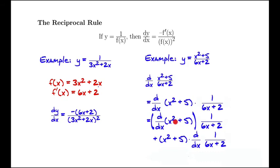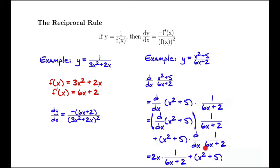So now we just need to take these derivatives. The derivative of x squared plus 5 is just 2x. We leave the 1 over 6x plus 2 alone, so we multiply by 1 over 6x plus 2. Plus (x squared plus 5), which we leave alone, times the derivative of 1 over 6x plus 2. For that derivative, we use the reciprocal rule again: we take the derivative of the denominator, which is 6, put a minus sign in front — so it's minus 6 — and divide by the denominator squared, (6x plus 2) squared. This is our final answer, combining the product rule with the reciprocal rule.